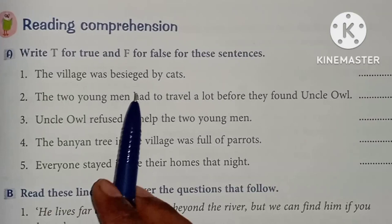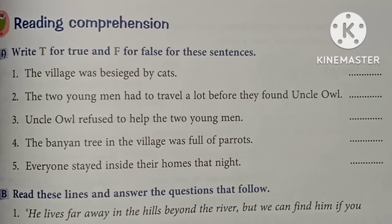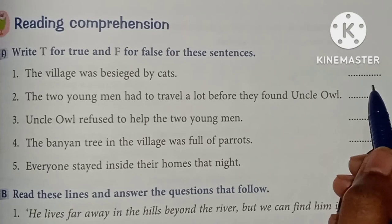Question number one: the village was beset by cats. Beside means ghere lena hootah hai. Toh joh village hai, village ko cat ke dwara ghere liya gya tha — nahi. Toh kis ke dwara ghere liya gya tha? Rat ke dwara, rats — bohut sare rats the, unke dwara ghere liya gya tha. Toh yoh false hai.